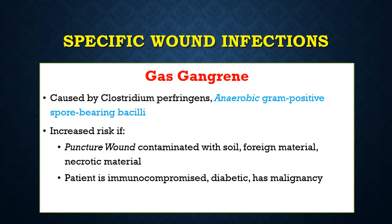We now come to specific wound infections important in clinical practice. First is gas gangrene, caused by Clostridium perfringens — anaerobic, gram-positive, spore-bearing bacilli. There is increased risk in puncture wounds, where the entry point is small but the depth is large, such as stiletto injuries, thorns, or metal nails. If these are contaminated with soil, foreign material, or necrotic material, they may carry Clostridium perfringens.